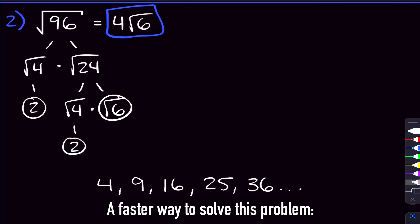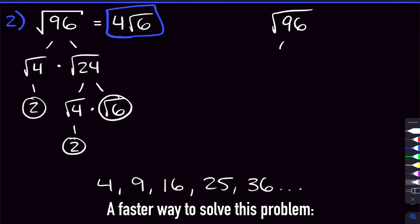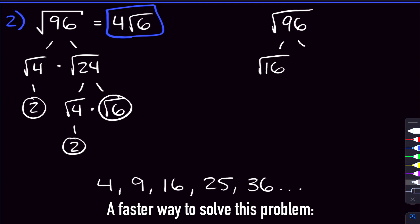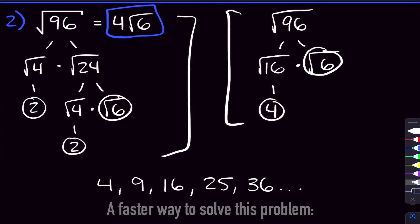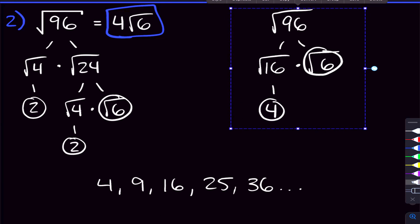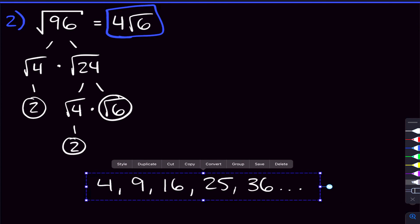There's one other thing I want to note about this problem — it can help you solve these even faster. What we want to do is take out the largest perfect square we can from the square root. For the square root of 96, 16 actually can get taken out. We can break up the square root of 96 into the square root of 16 times the square root of 6. That square root of 16 gives you 4 right away, so you have 4 rad 6 — much less work. Either way, you still get the right answer.